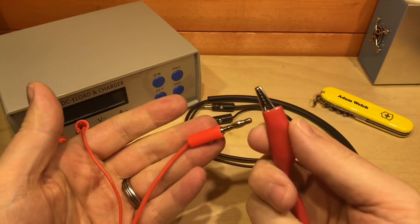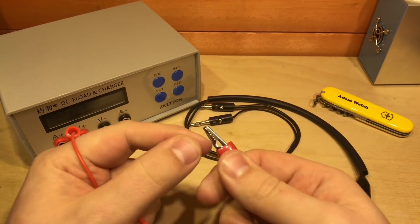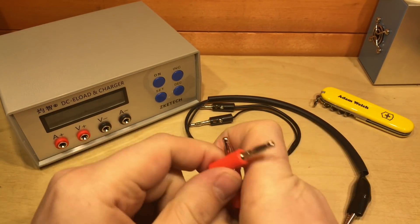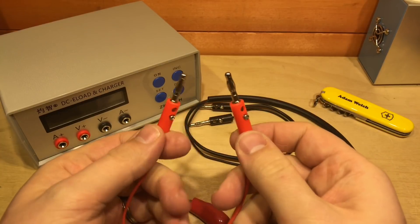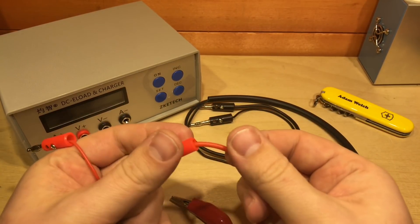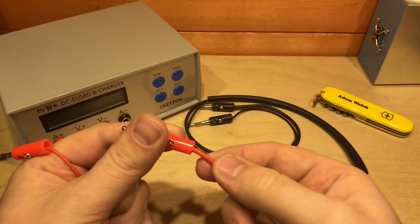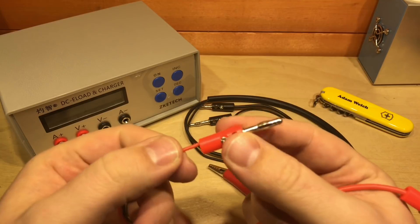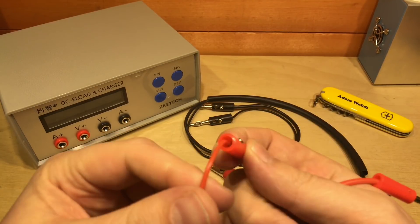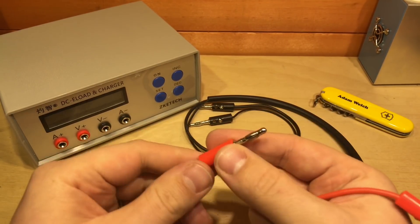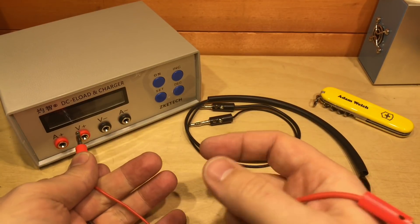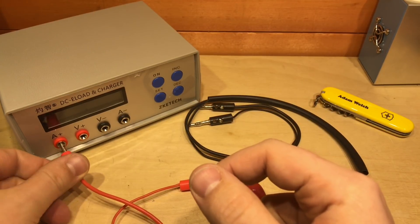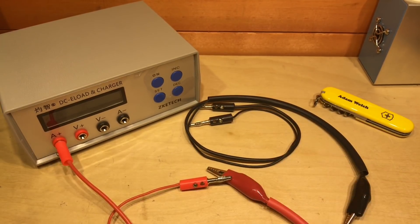The testing cables come out in crocodile clips here, and they're quite large actually. But as you can see at the other end, we've got two banana plugs. One is on a silicon piece of wire here which is of a reasonable gauge, and the other one is a much thinner silicon coated cable there. Obviously that thinner one is for reading the voltage and the thicker one is to actually carry the current, so that would connect to the A plus connector.